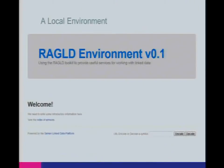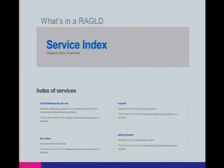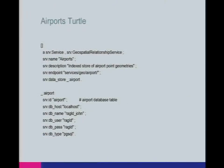When you successfully install a RAGLD environment, you get a nice welcome page, and another page gives you a list of the services you've set up. One we built used government open data — various services based on airports and bus stops from transport.data.gov. You take the RAGLD platform and edit a configuration file written in Turtle, which is the slightly more human-friendly version of RDF, to specify the different services you want to construct and how they should behave.